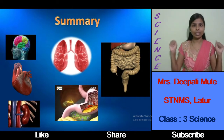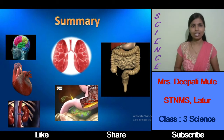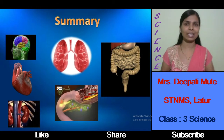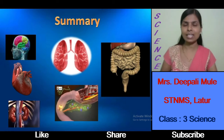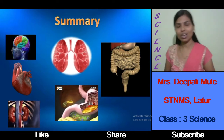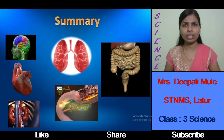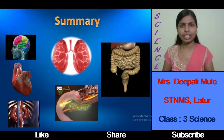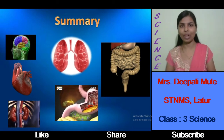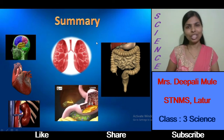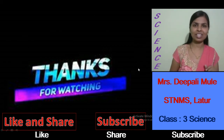The lungs work in the respiration process. The liver is the largest and heaviest organ present inside our body and helps in the digestion process. We also learned about the small intestine, where the digestion process is completed, and the large intestine, where waste material is expelled. In the next video, we are going to learn how these different organs work together to form organ systems. I hope you understood this topic. If you like this video, please like, subscribe, and share. Thank you.